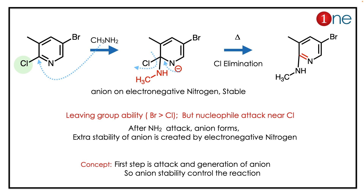The answer is interesting because you will get an unexpected product. The first step of the reaction is attack of the nucleophile — it will attack either chlorine or bromine, since those are the functional groups. Most people confuse leaving group ability: bromine is a better leaving group than chlorine, so you might think the nucleophile will attack bromine.